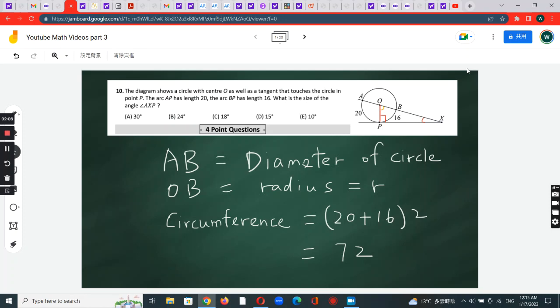Now, because this is the diameter, the sum of AP and BP together is a half circle. From this we can calculate the circumference of the whole circle.